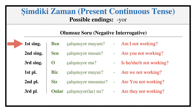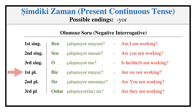Present Continuous — Negative Interrogative: ÇALIŞMIYOR MUYUM, ÇALIŞMIYOR MUSUN, ÇALIŞMIYOR MU, ÇALIŞMIYOR MUYUZ, ÇALIŞMIYOR MUSUNUZ, ÇALIŞMIYORLAR MI?